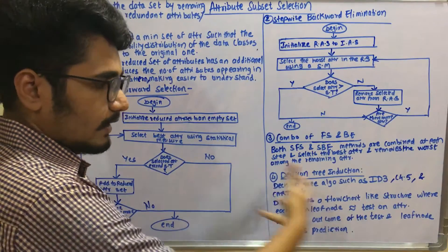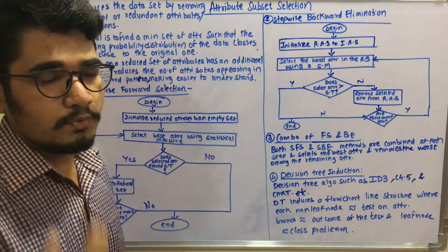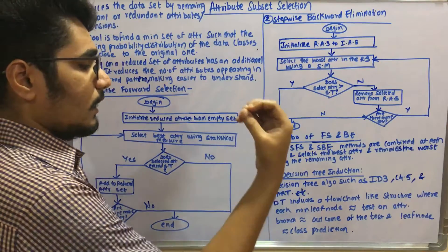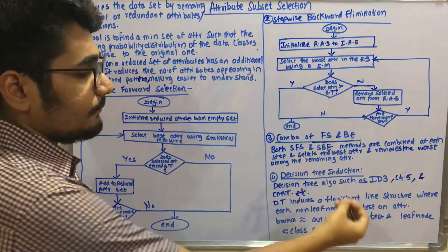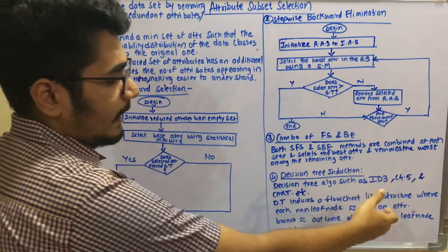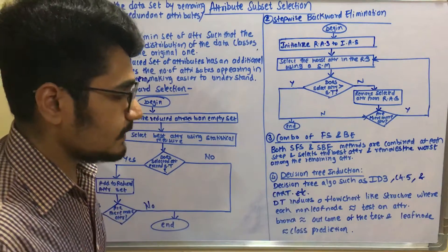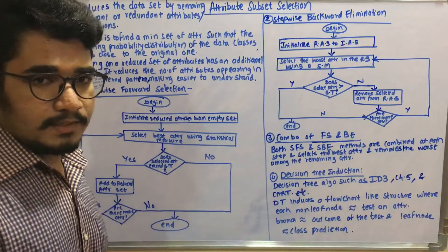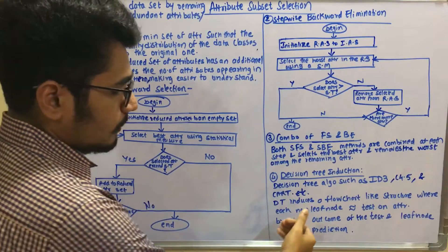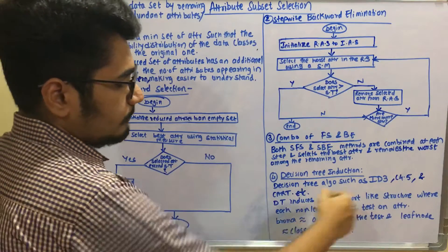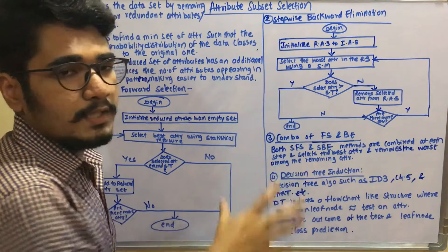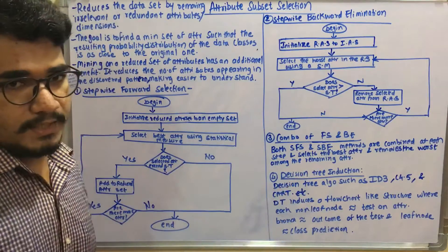This induces a flowchart-like structure where you have non-leaf nodes, leaf nodes, and branch nodes. The non-leaf nodes correspond to a test on the attribute. After you execute that test, the resultant values are represented on a particular branch. The branch represents the outcome of that test from the non-leaf node, and all the leaf nodes represent a class prediction.